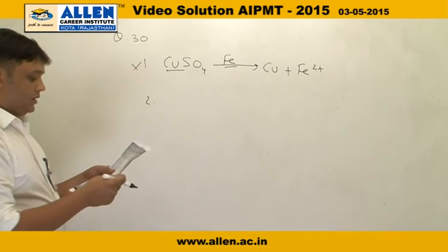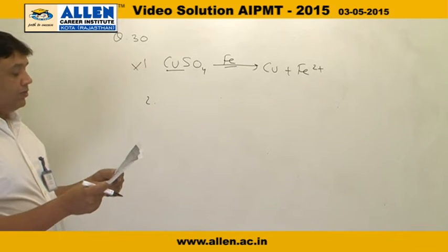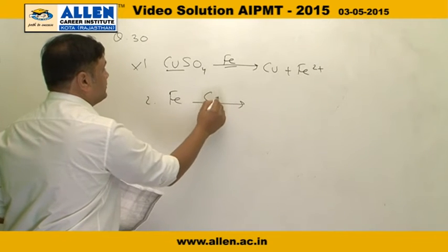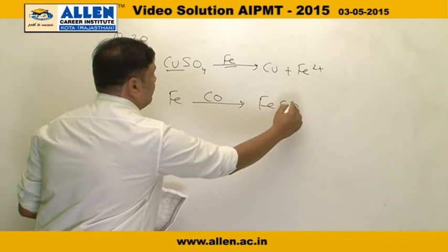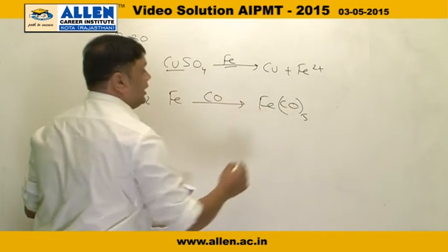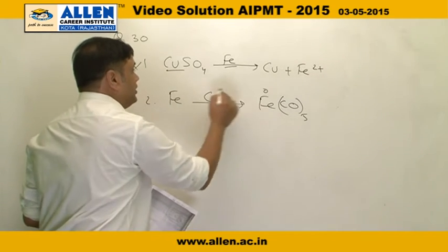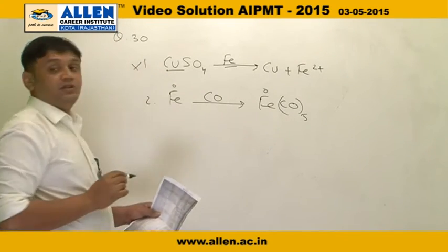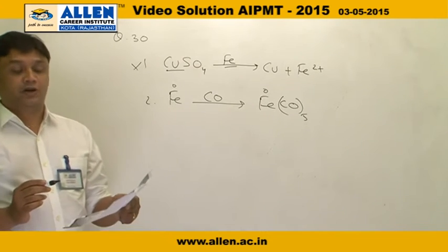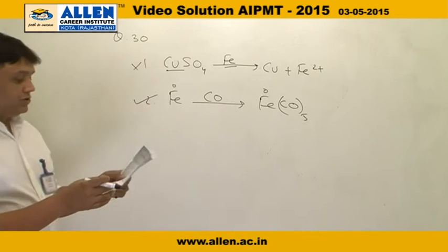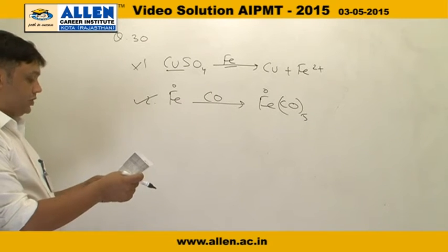The second option is formation of Fe(CO)5 from Fe. When iron reacts with CO we get Fe(CO)5, and if you calculate the oxidation state, it is 0 and remains 0, meaning this is not an oxidation process. This is therefore the correct option because iron is not involved in oxidation.